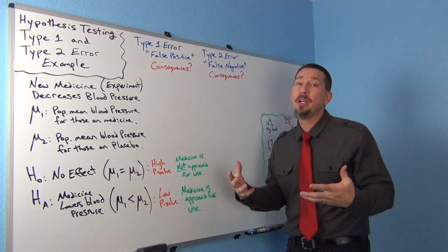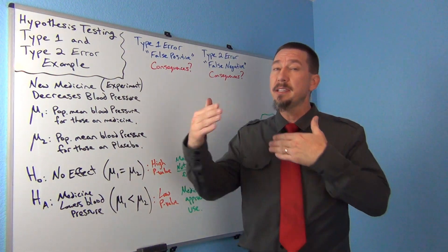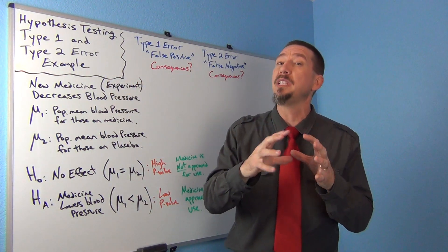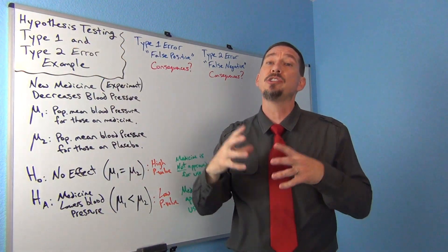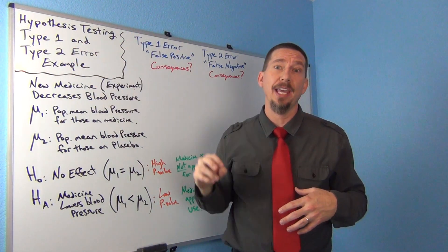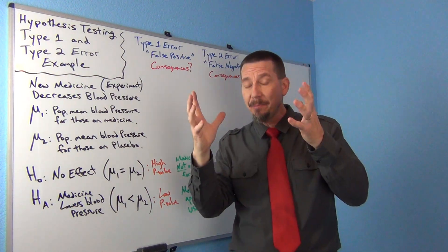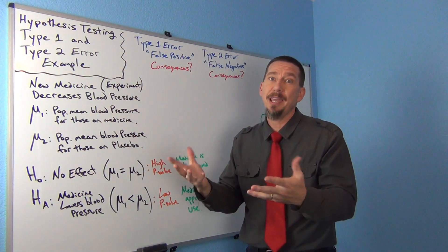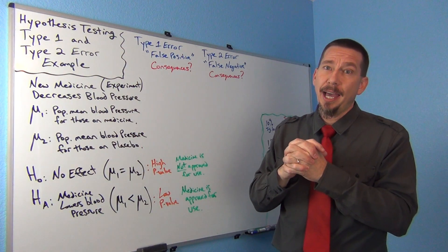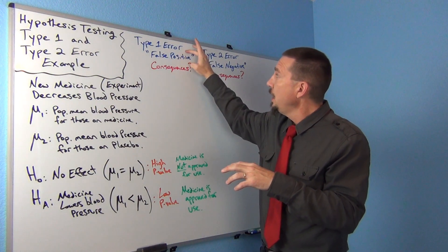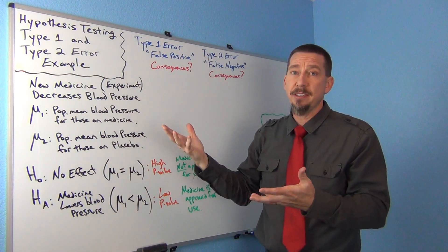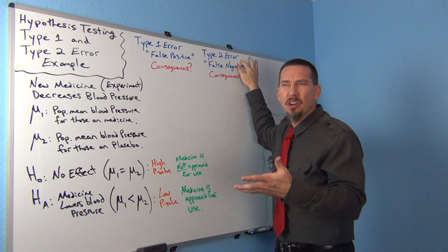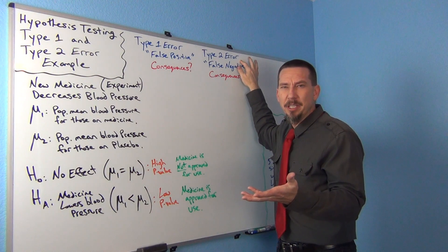In our last video we saw that a type 1 or type 2 error occurs when your random sample data leads you to believe something's true about the population when it turns out later it's not true about the population. A type 1 error is believing that the alternative hypothesis is true when it's really not. And a type 2 error is believing that the null hypothesis is probably true when it's really not.